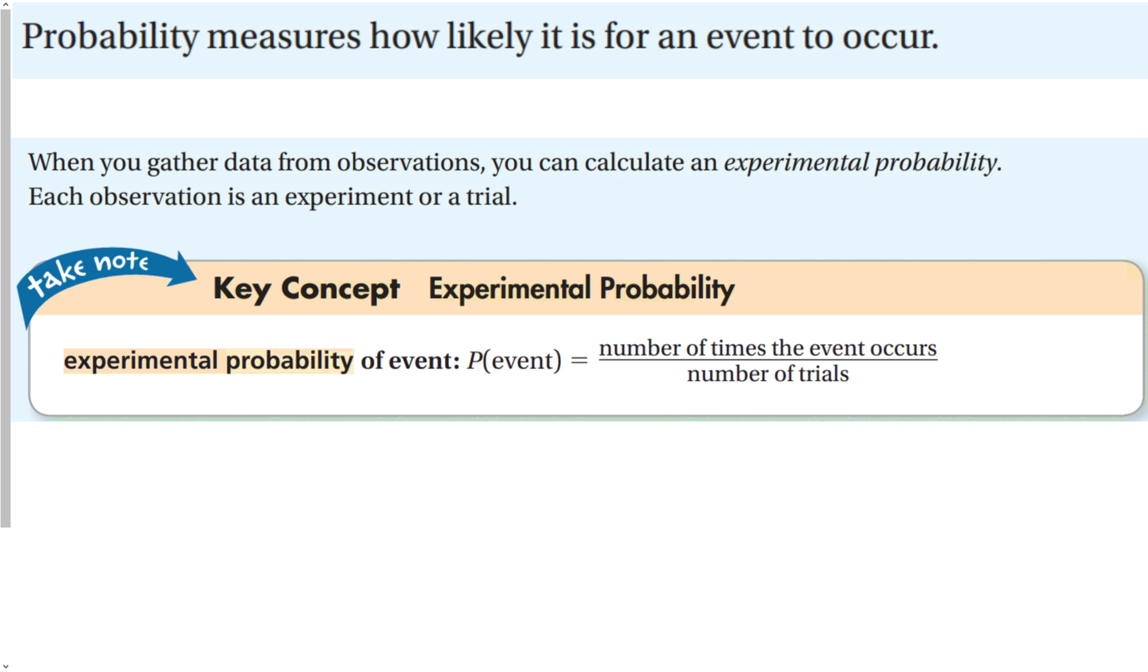Probability measures how likely it is for an event to occur. When you gather this data, when you do an experiment, or when you look at the observations, we can calculate something called experimental probability.